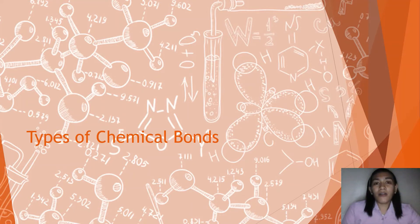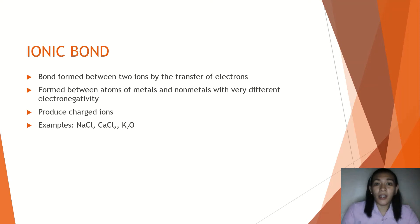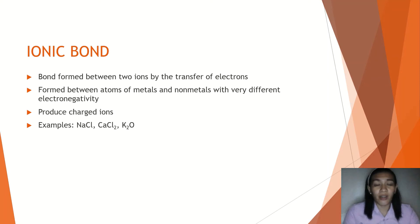Let's go to the different types of chemical bonds. Our first type is the ionic bond — the bond formed between two ions by the transfer of electrons. The keyword for ionic bond is transfer. It is formed between atoms of metals and non-metals with very different electronegativity, and they produce charged ions. We have two types of ions: cations, which are positively charged, and anions, which are negatively charged. Examples of compounds with ionic bonds include sodium chloride (NaCl), calcium chloride, and potassium oxide.